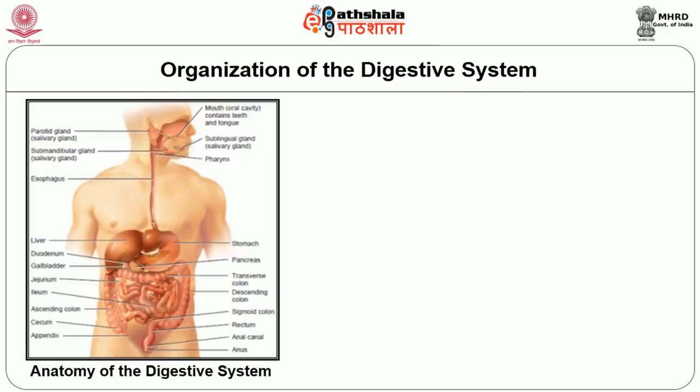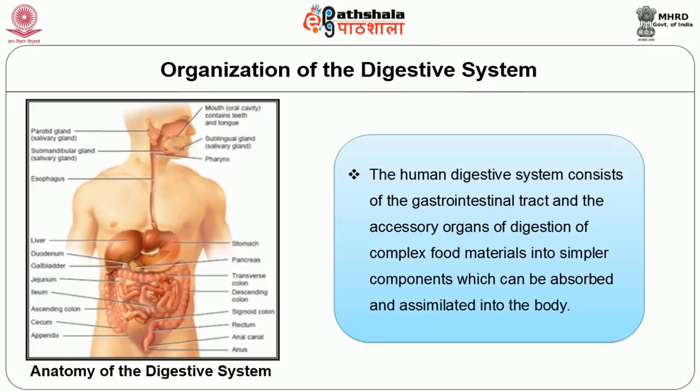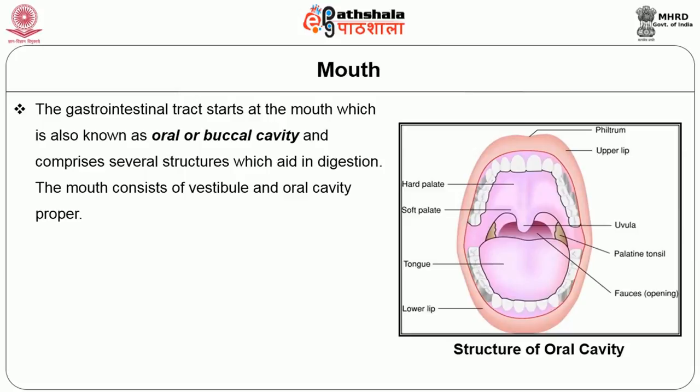Coming to the organization of the digestive system, the human digestive system consists of the gastrointestinal tract and the accessory organs of digestion, which break down complex food materials into simpler components that can be absorbed and assimilated into the body. The gastrointestinal tract starts at the mouth, also known as the oral or buccal cavity, which comprises several structures that aid in digestion. The mouth consists of the vestibule and oral cavity proper.